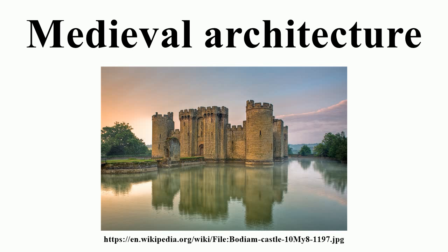Surviving examples of medieval secular architecture mainly serve for defense. Castles and fortified walls provide the most notable remaining non-religious examples of medieval architecture. Windows gained a cross shape for more than decorative purposes — they provided a perfect fit for a crossbowman to safely shoot at invaders from inside. Crenelated walls provided shelters for archers on the roofs to hide behind when not shooting invaders.